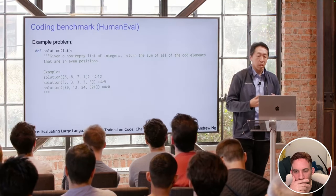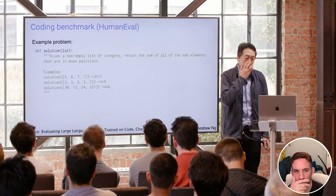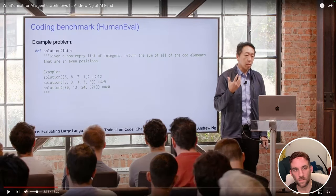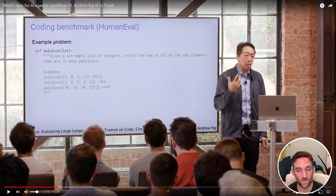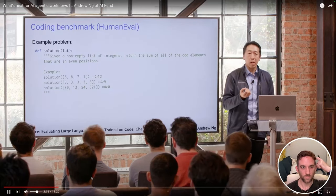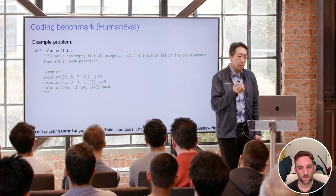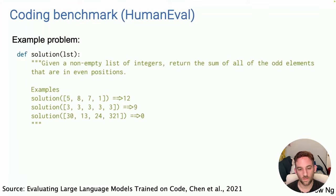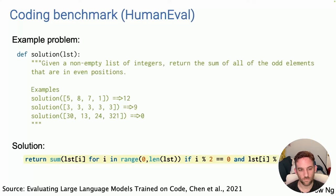My team analyzed data using a coding benchmark called the HumanEval benchmark, released by OpenAI a few years ago. We did something similar where we set up a human evaluation benchmark with a list of functions, and depending on the model used, it would tell you if tests were successful. The benchmark has coding problems like: given a non-empty list of integers, return the sum of all odd elements at even positions.